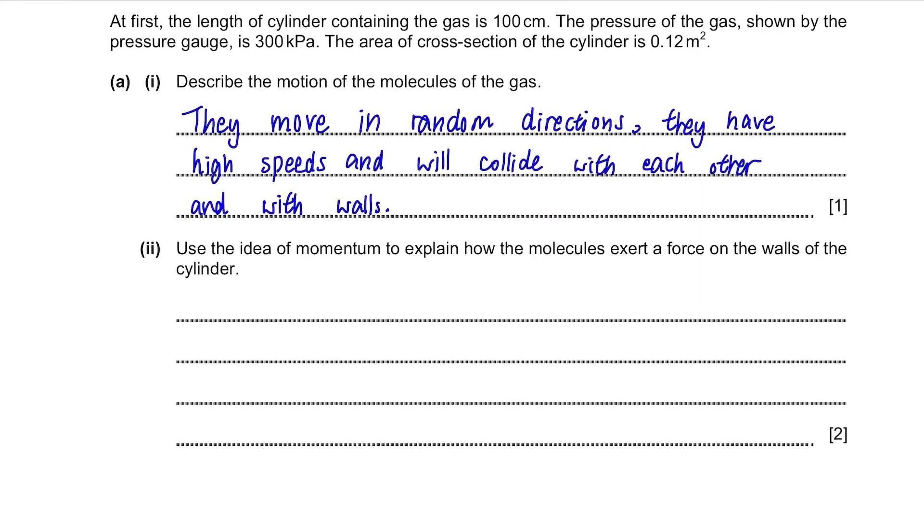Next, use the idea of momentum to explain how the molecules exert the force on the walls of the cylinder. Well, as the molecules move, they collide with walls of the cylinder and this will cause the change in momentum of molecules. Why is that so? It's because momentum equals mass times velocity and velocity is changed after the collision resulting in change in momentum of molecules. But force is the rate of change of momentum and is needed to change the momentum, thus exerting a force on the walls.